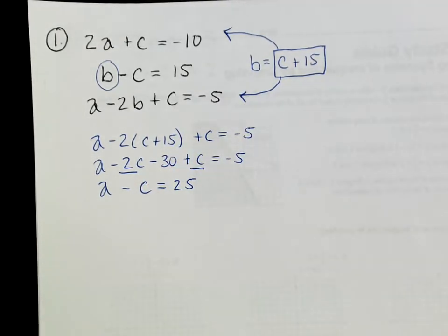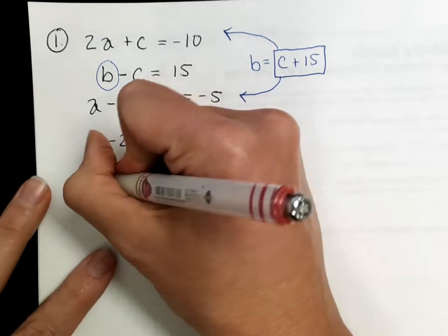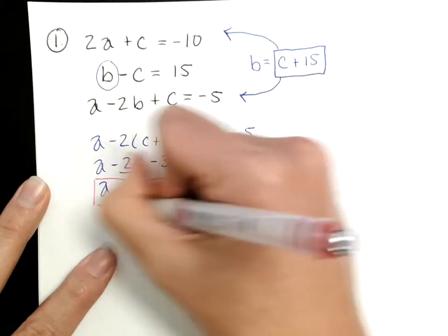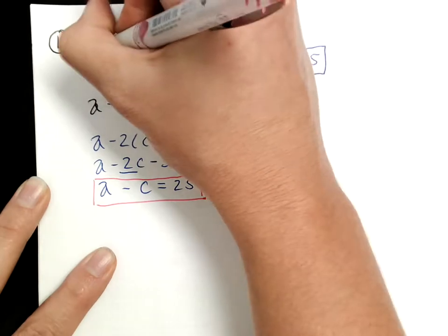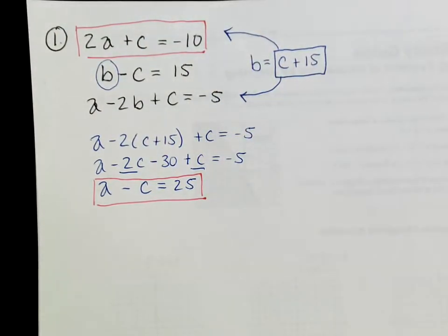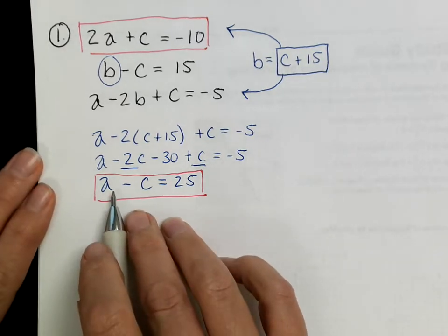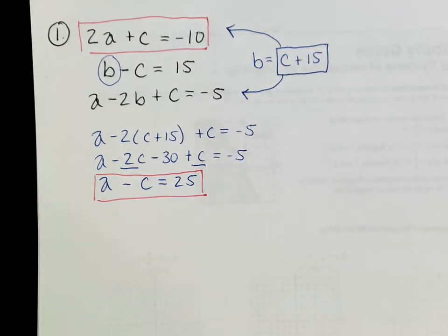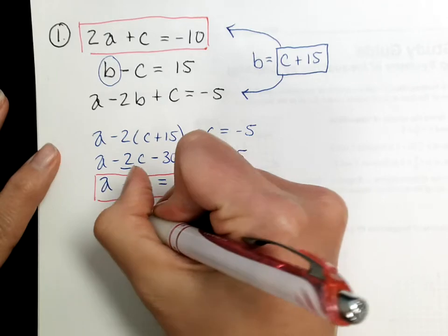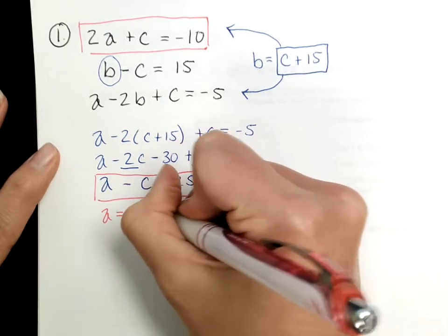Now I have two equations that each have only a and c. I can use those two equations together to solve for both a and c. I'm going to get a by itself — you could use elimination, but I'm focusing on substitution. That gives me a = c + 25.